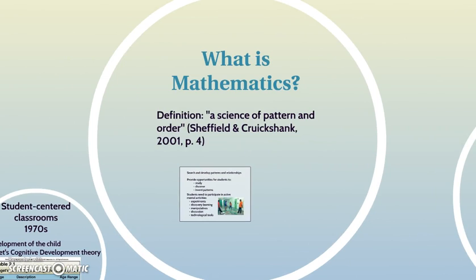So let's define mathematics. When we usually define mathematics we think about numbers, lines, shapes, and computing numbers. A concise definition of mathematics is a science of pattern and order. Thinking of mathematics as a science of pattern and order will help you as a teacher begin to teach your students mathematics, and we're going to discuss how we can help our students understand, practice, and use mathematics.